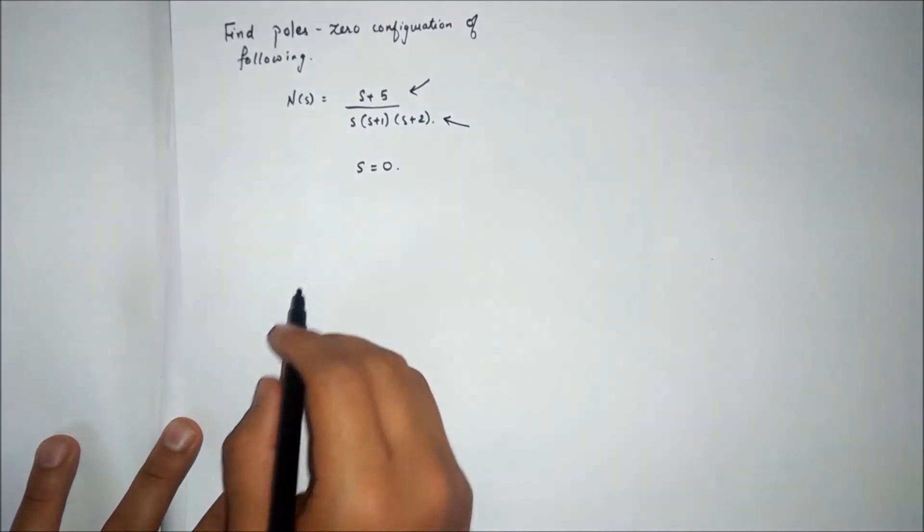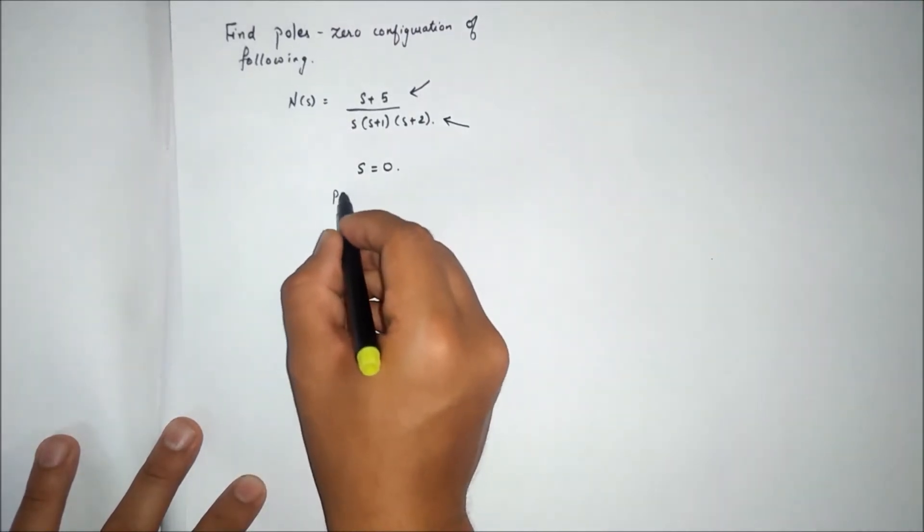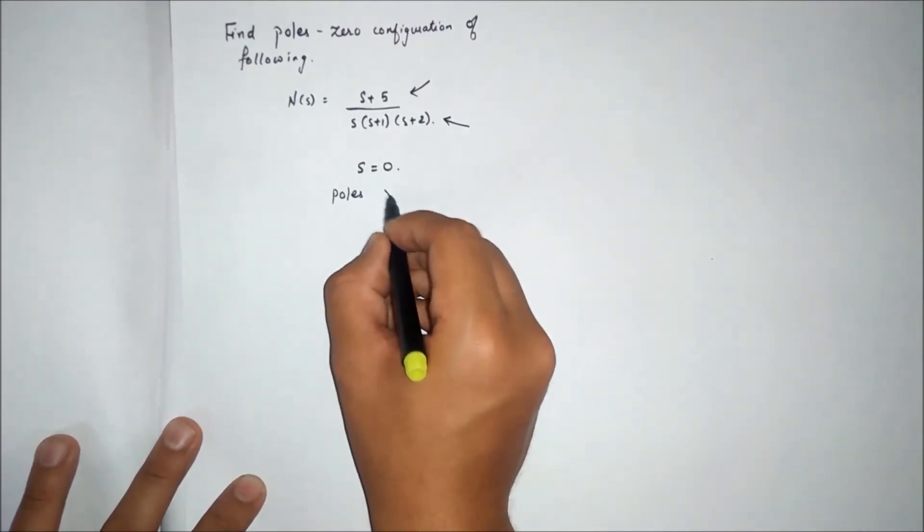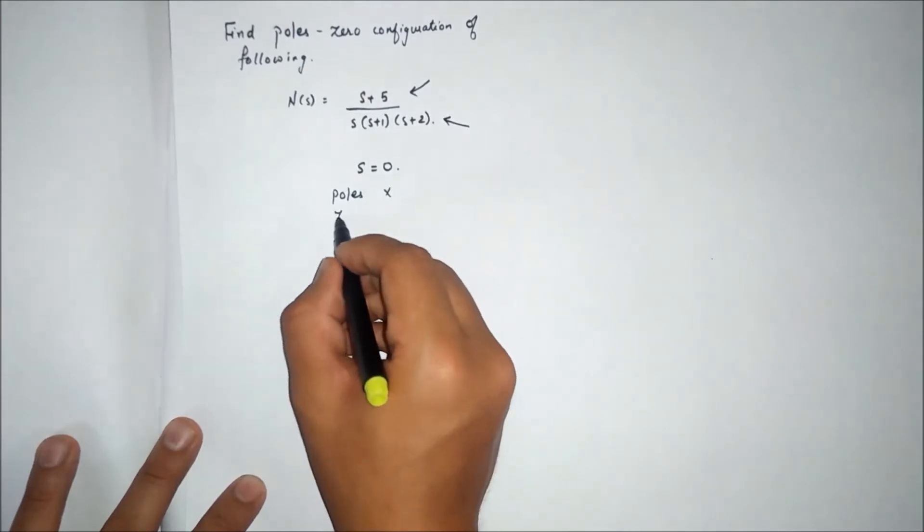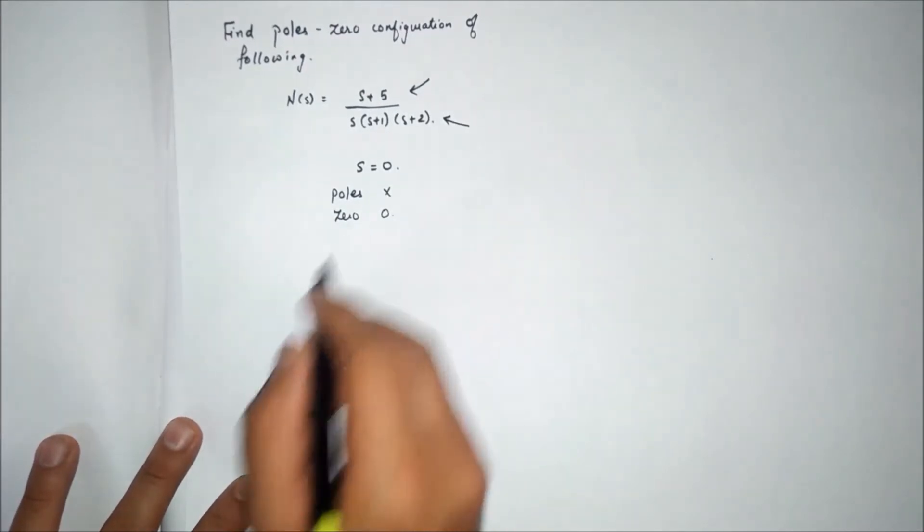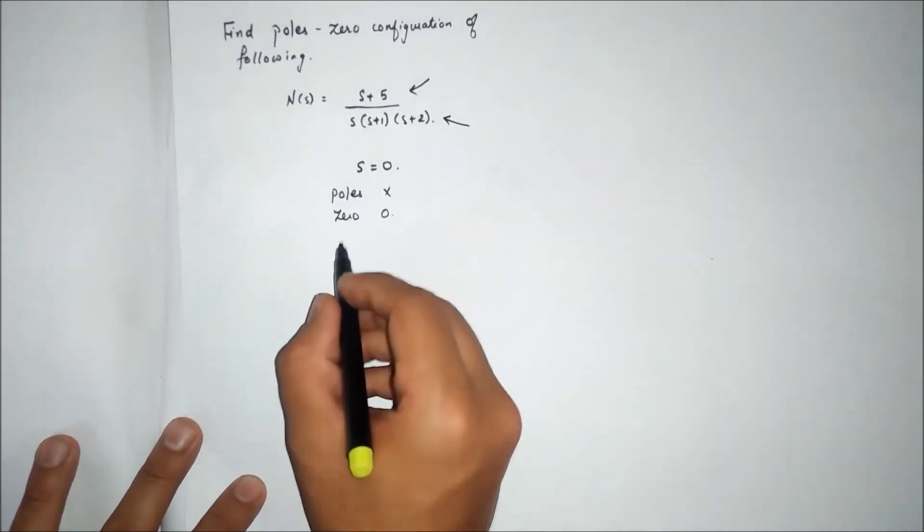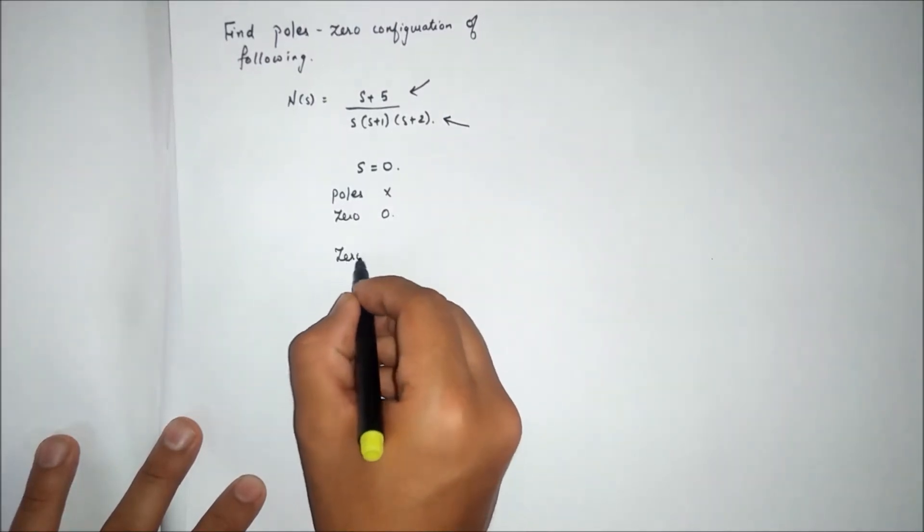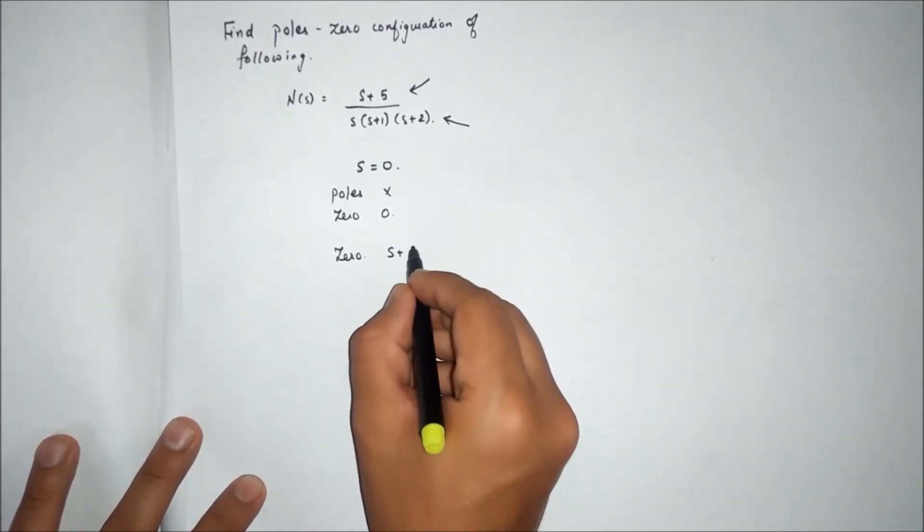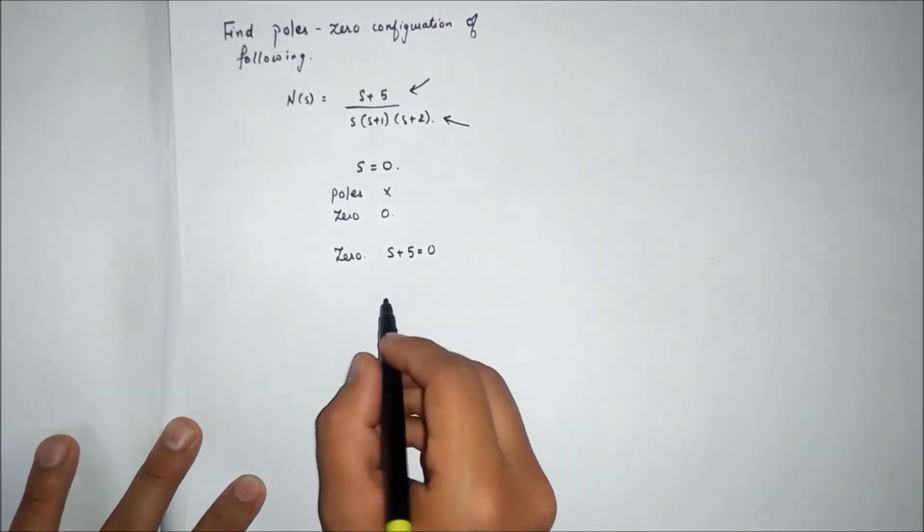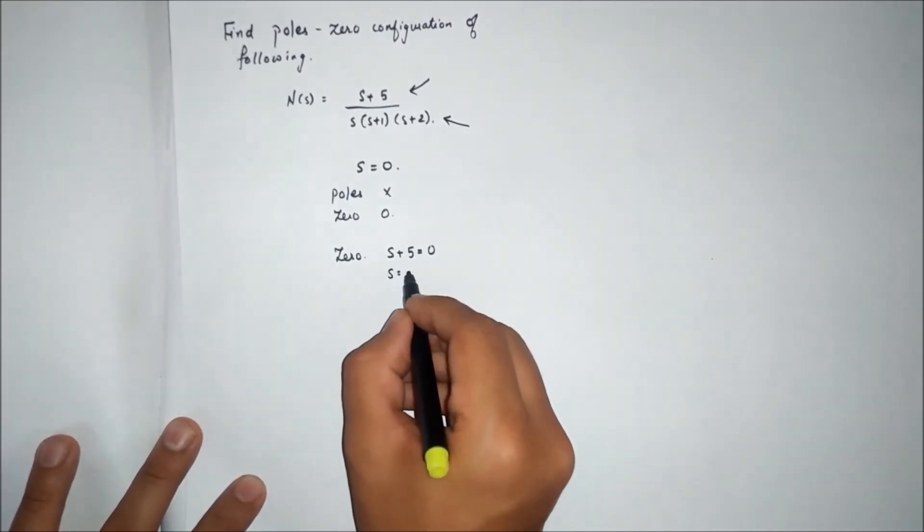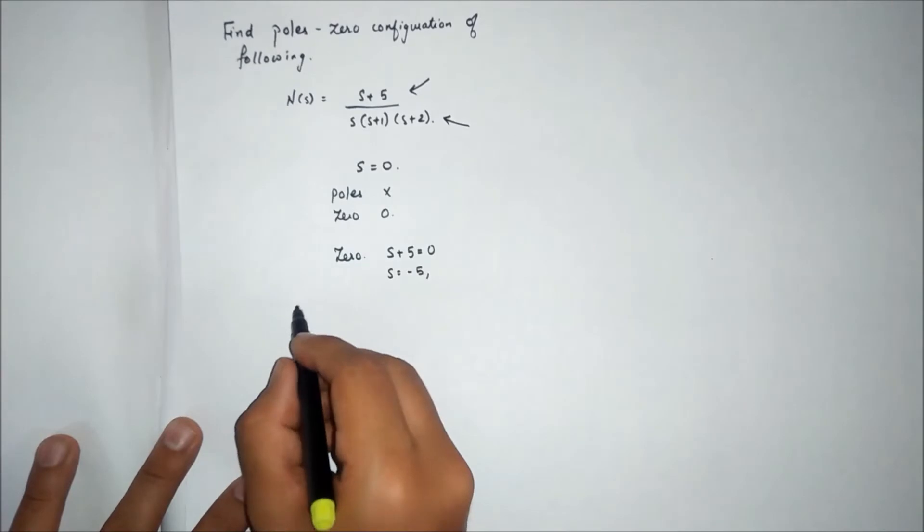Poles are denoted by cross mark and zeros are denoted by circle. Taking the numerator part for zero: s plus five equals zero, so s equals minus five. And for poles,